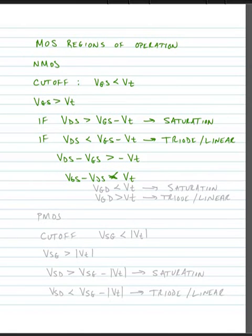Because the source is common to both VGS and VDS, we could also just write VGD must be less than the threshold voltage. If this is the case, then we're in saturation. Otherwise, we're in triode or linear.